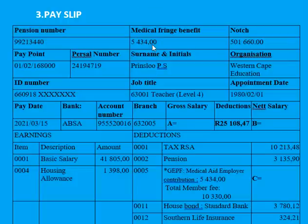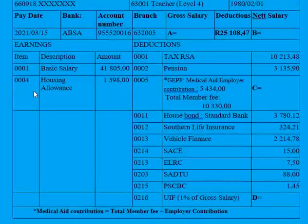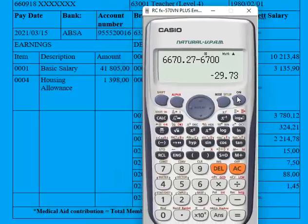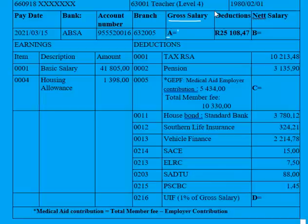The next document is the pay slip — what you receive at the end of the month showing all your income and deductions. The first thing to calculate is A, the gross salary. Gross salary is the salary before deductions. You add all your income items to get the gross salary. In this case: R41,805 plus R1,398 gives approximately R43,203.